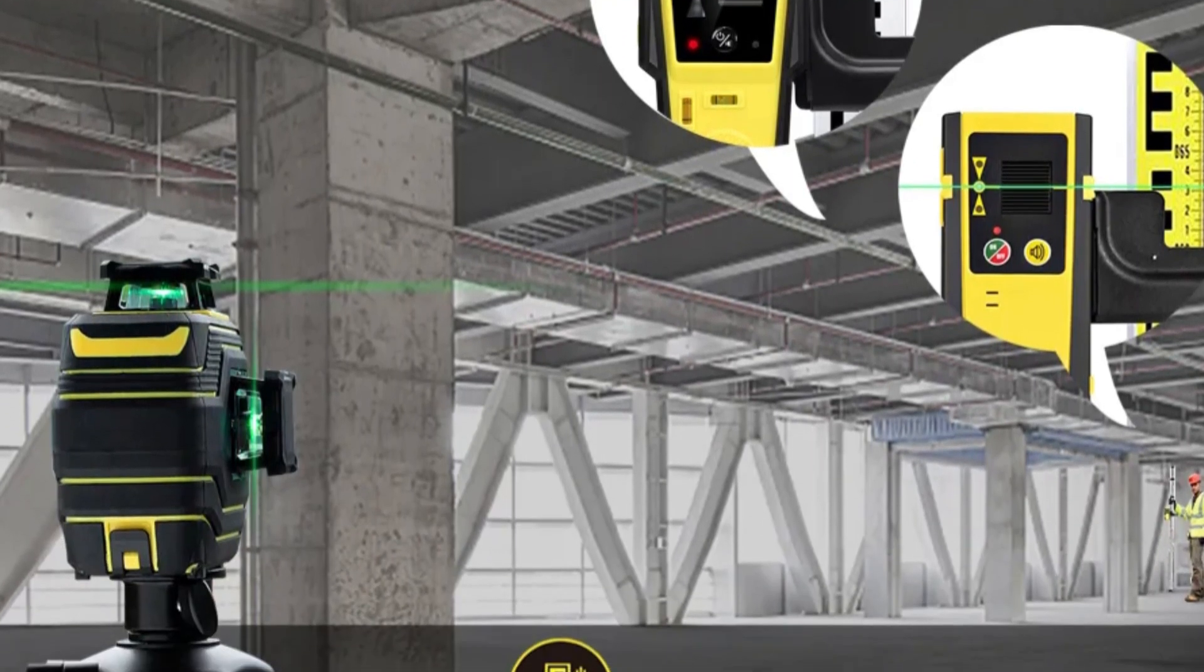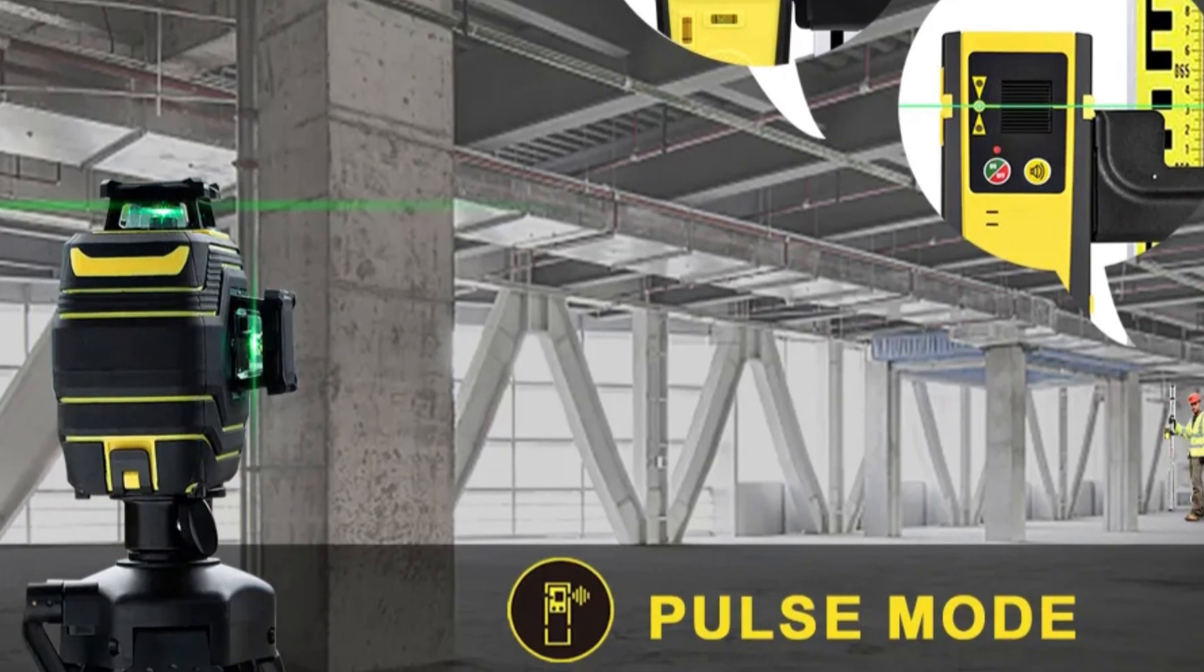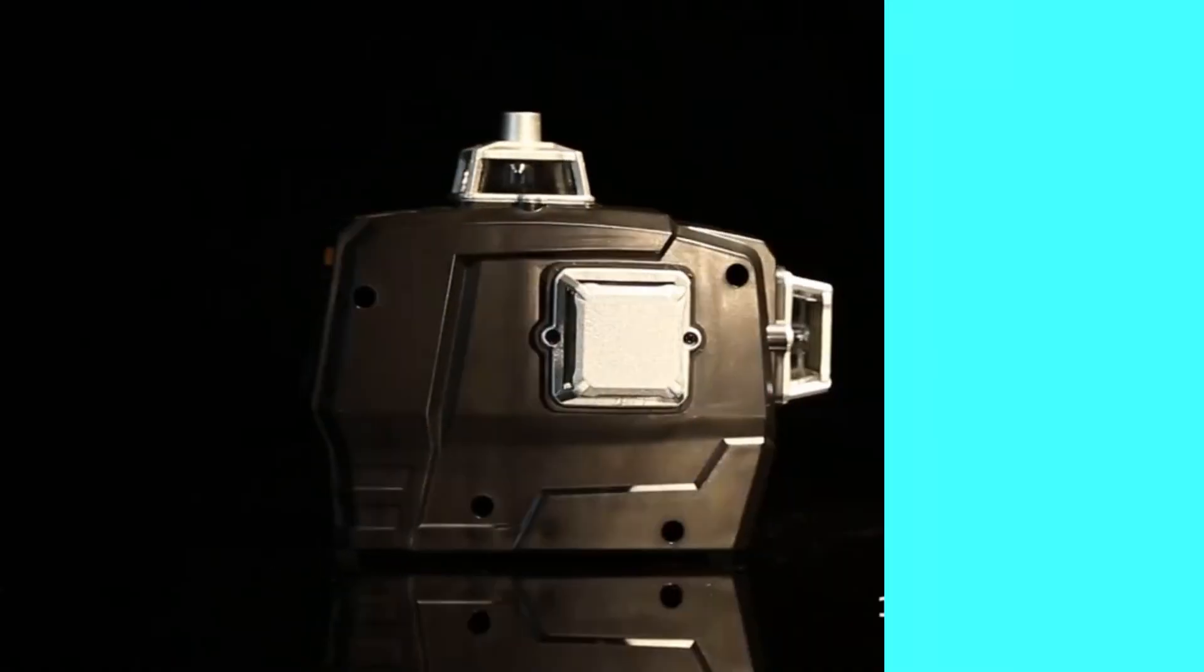Firecore offers a 1-year warranty for any manufacturing defects and responsive customer service. The F94TXG is designed to withstand tough job site conditions, and is easy to use, even for beginners.